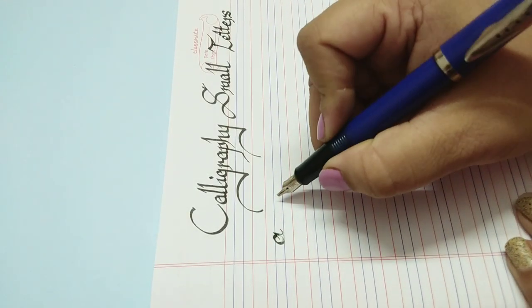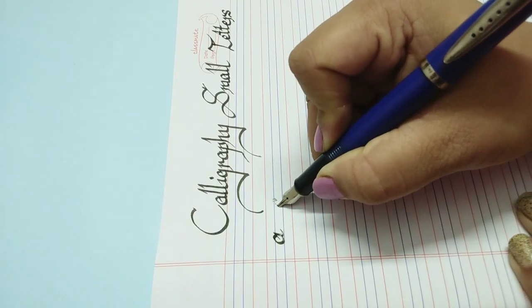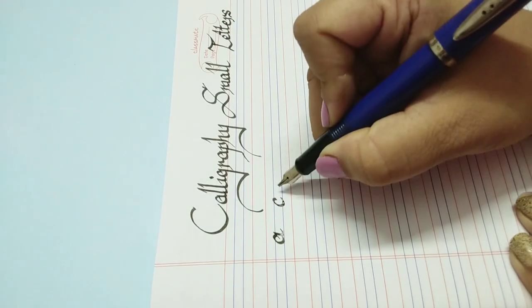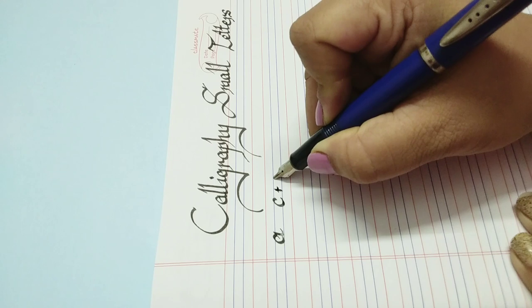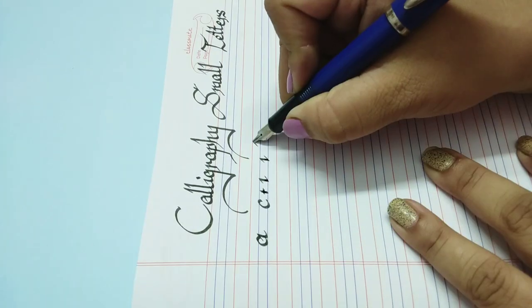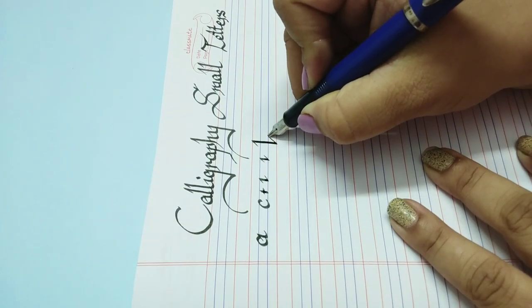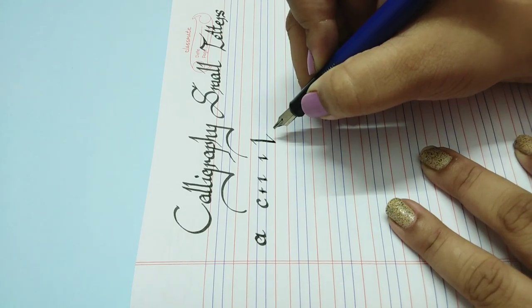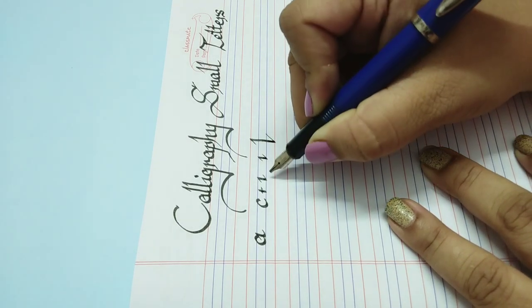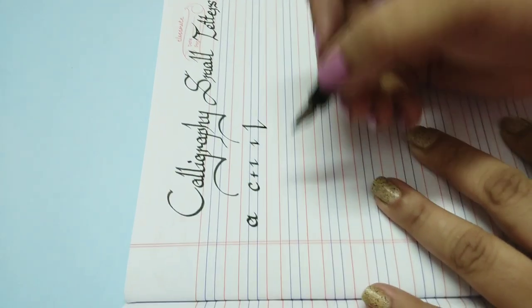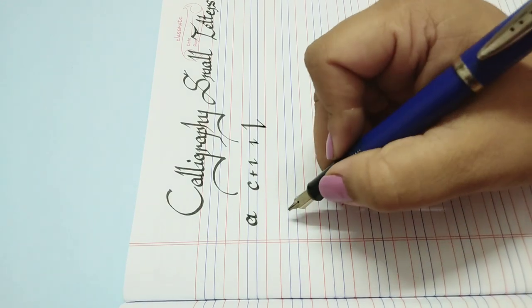So how we have to write 'a': we have to make a C plus this thing, a standing line. You have to write it small. So we will try again writing 'a'.